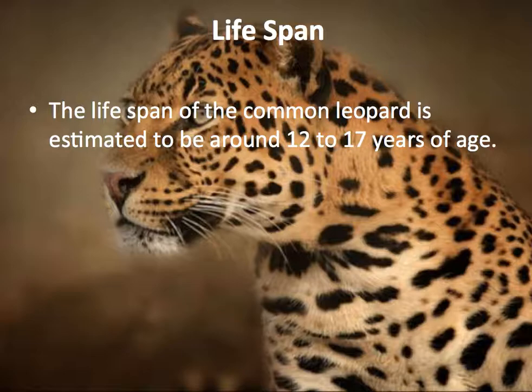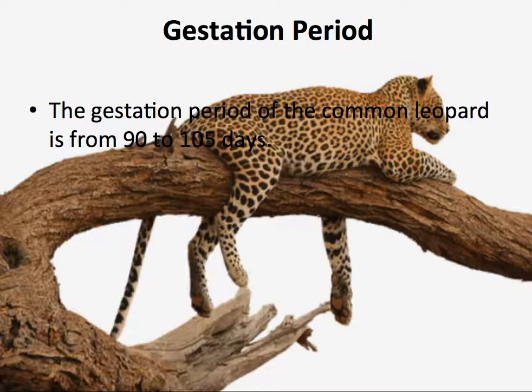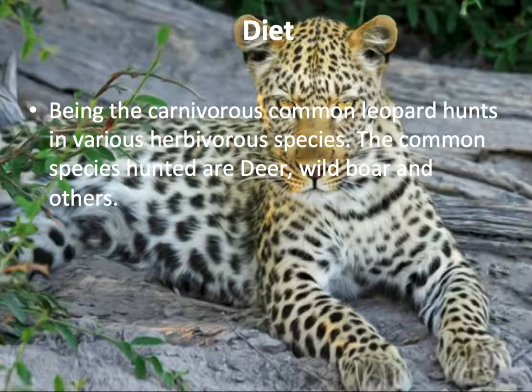Lifespan: The lifespan of the common leopard is limited to around 12 to 17 years of age. Gestation period: The gestation period varies from 90 to 105 days.